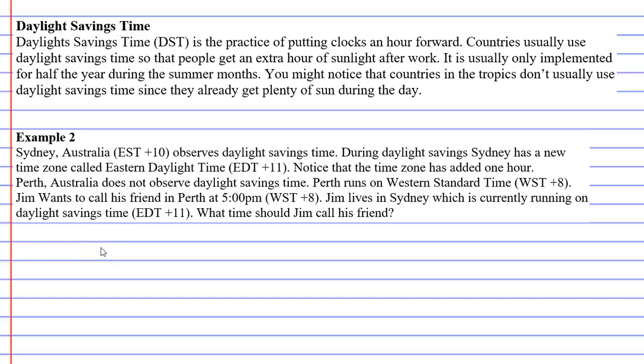So we're on to example two, and this one is about daylight savings time. Daylight savings time is the practice of putting clocks an hour forward. Countries usually use daylight savings time so that people get an extra hour of sunlight after work, meaning that parents can go home and have some time to play with their kids. It's usually only implemented during half the year, during your warmer summer months.